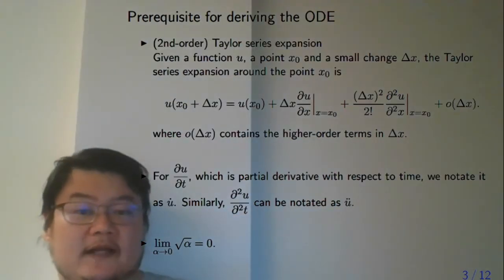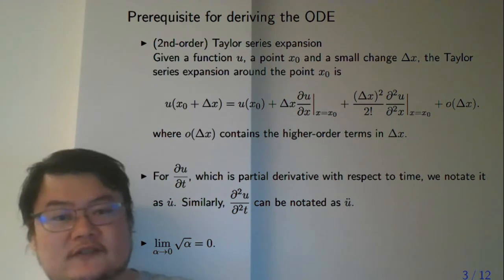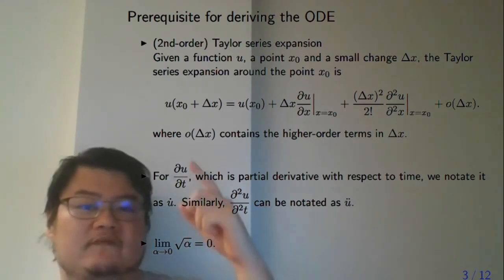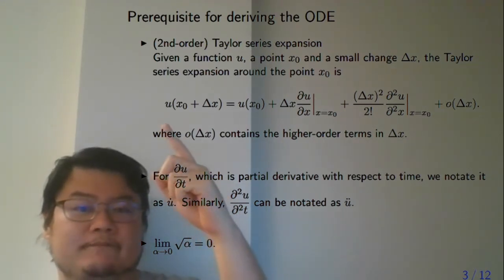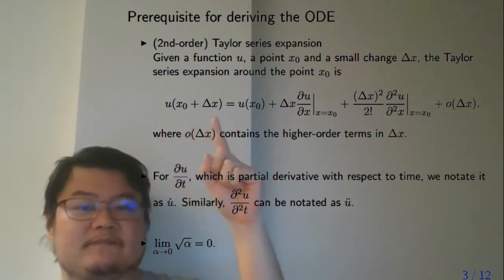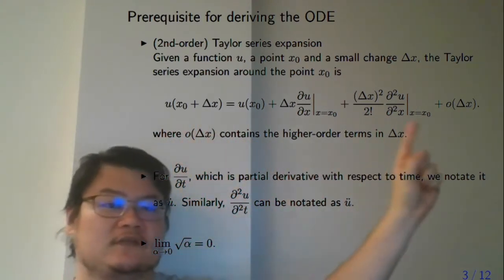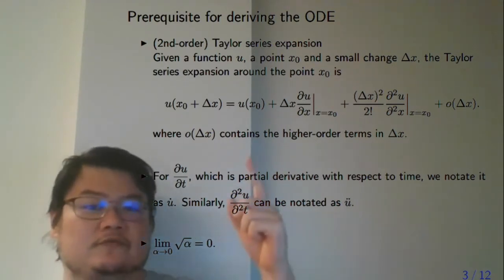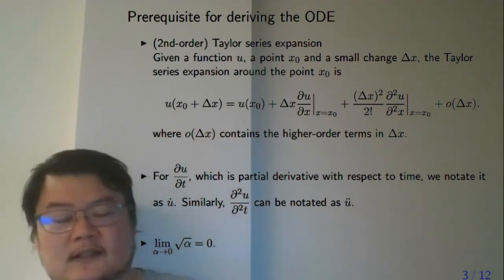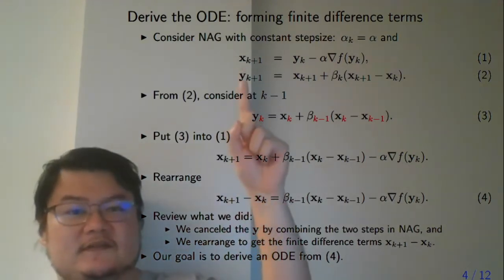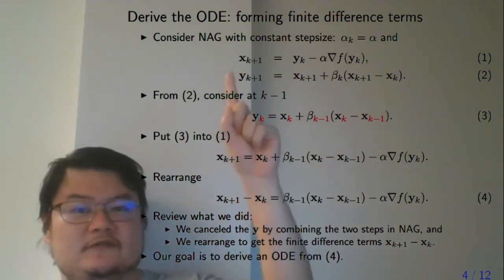The technique you need to derive this ODE is just Taylor series. You have function u, and you want to look at this function at x0 with respect to a small change. This is the second-order Taylor series of function u. The NAG has three equations, and you want to combine them into one.